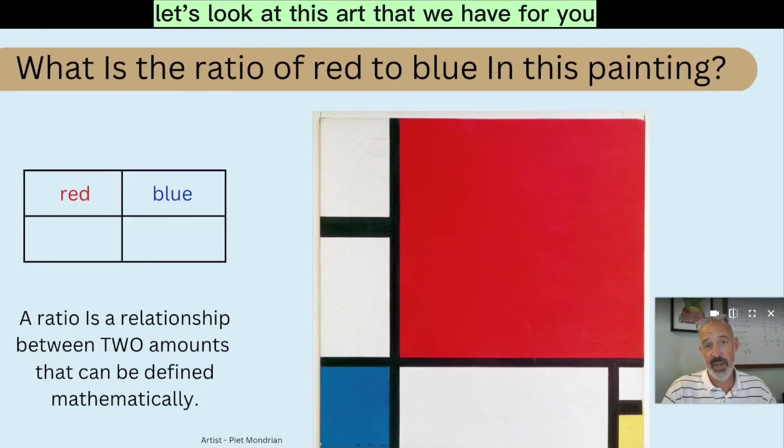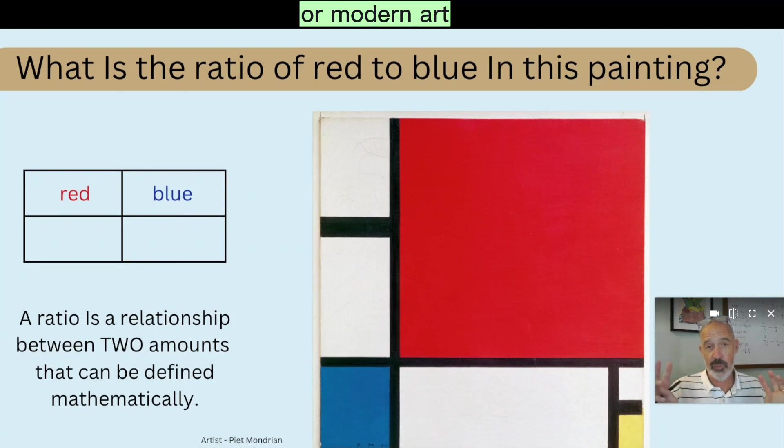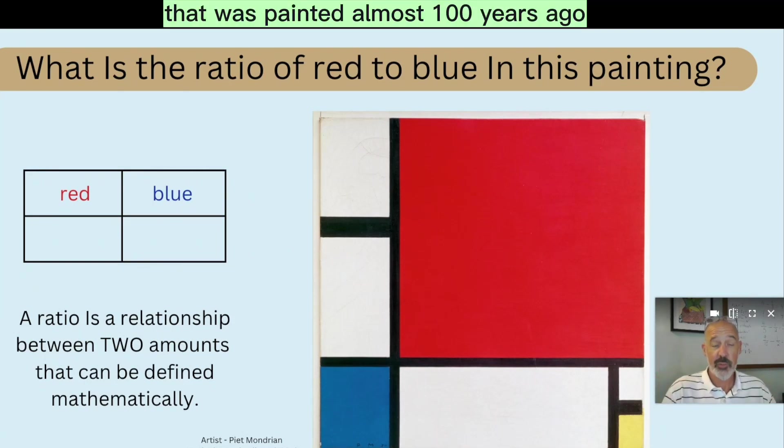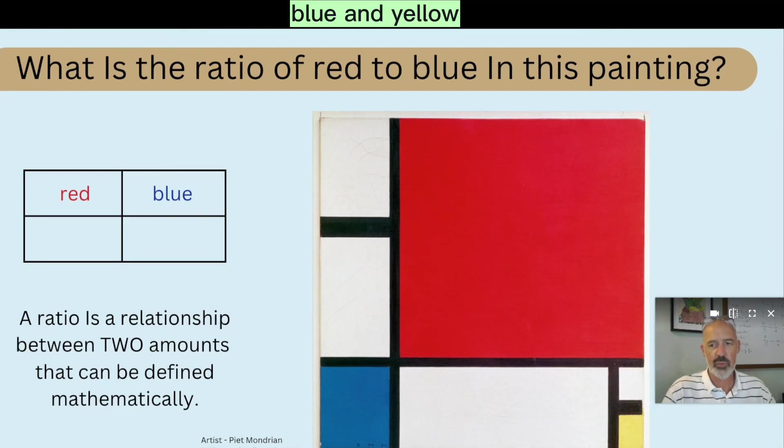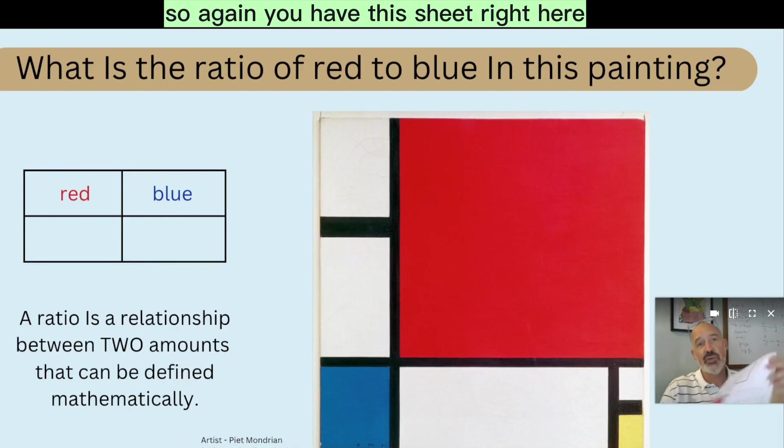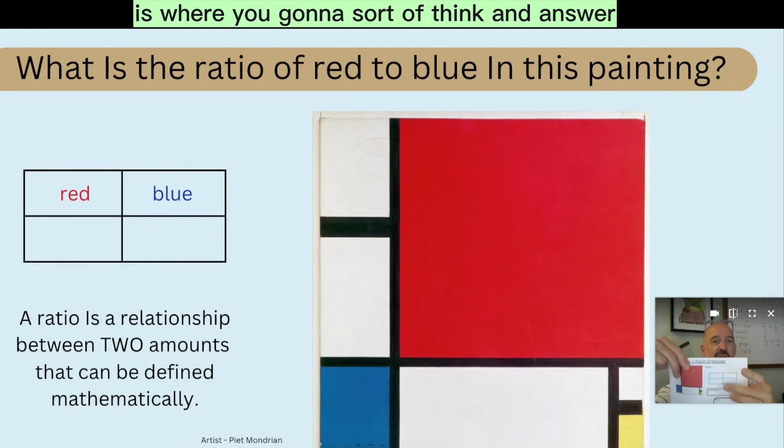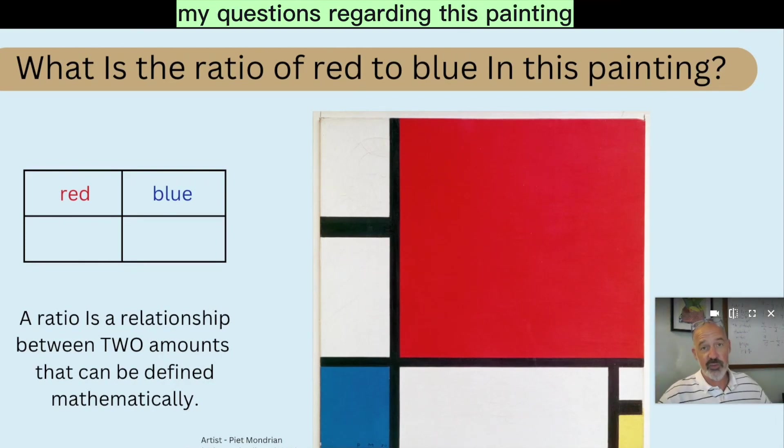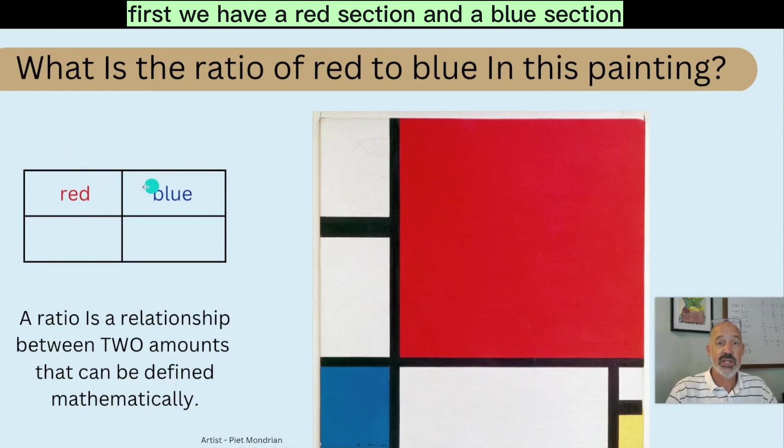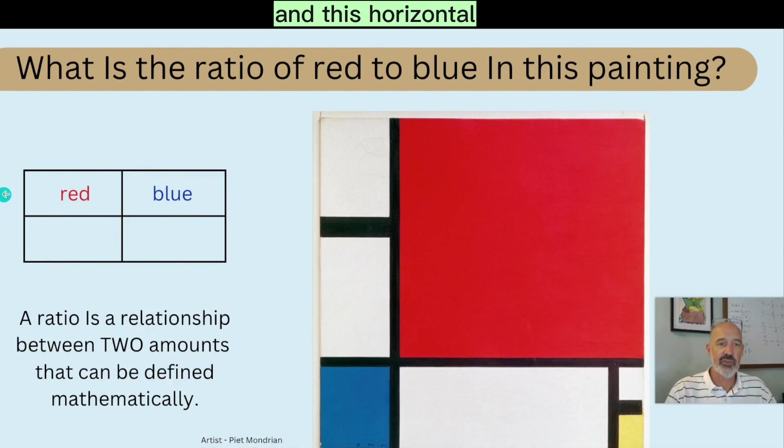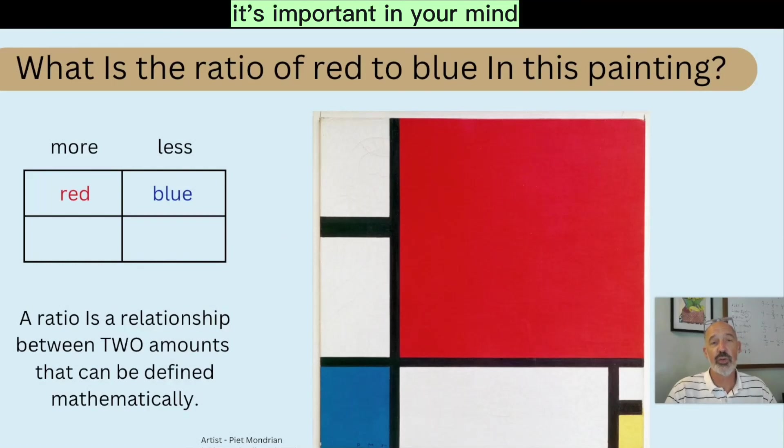So if you want to write that right here where it says ratio, it's a relationship between two amounts that can be defined mathematically. Take a second, pause the video, copy that down and then continue the video to begin with. Let's look at this art that we have for you. Now, this is contemporary or modern art that was painted almost 100 years ago and it's called red, blue and yellow. We're going to focus on the ratio or the relationship between the red and the blue. You have this sheet right here is where you're going to sort of think and answer my questions regarding this painting. First, we have a red section and a blue section. Now, these are called columns. These vertical elements we'll call a column and this horizontal, that's called a row. So in the first row, you write red and blue. Now, whenever you think about a ratio, it's important in your mind to keep track of which is the more and which is the less.